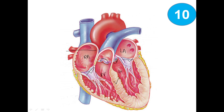The valve cusps are held by tendons called chordae tendineae, and they are attached to finger-like muscles called papillary muscles. There are also trabeculae muscles. For external vessels, we have the pulmonary trunk, which divides into the left and right pulmonary arteries, and the aorta, which has three branches: the left subclavian, left common carotid, and brachiocephalic.